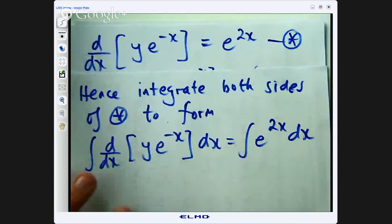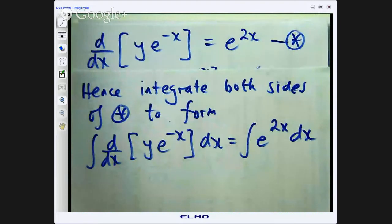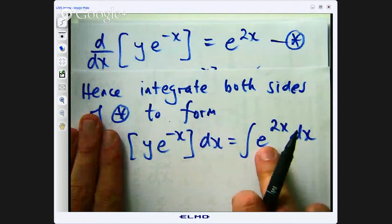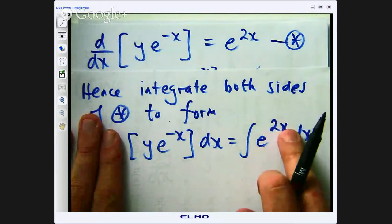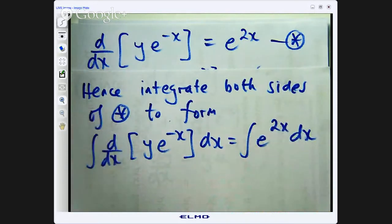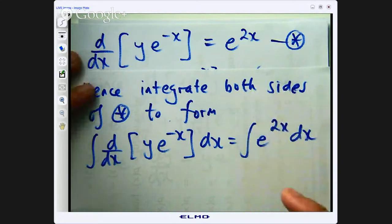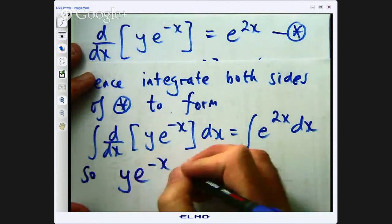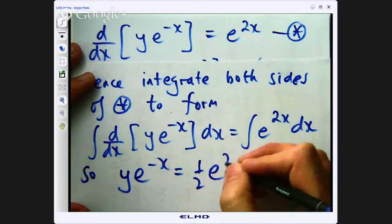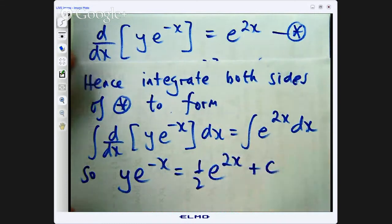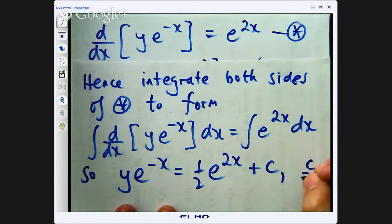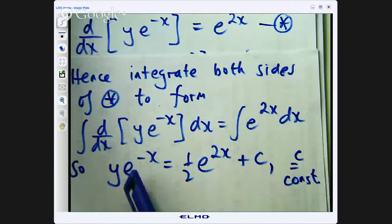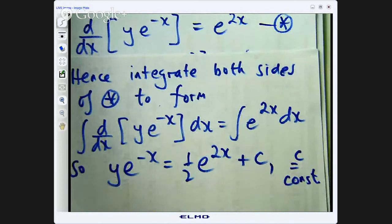Now we know integration and differentiation are the opposites of each other, so that will disappear. When I integrate this, I will get e to the 2x times 1 half and I will put a constant of integration in, say c, where c equals a constant.